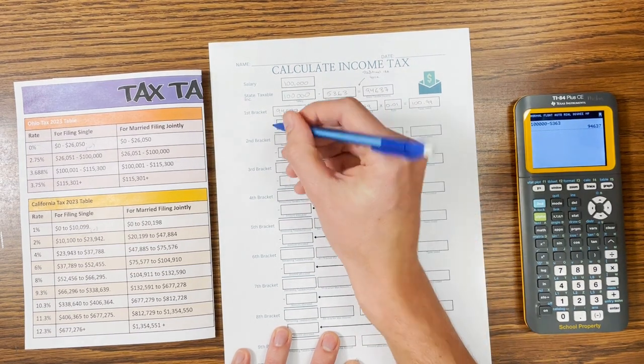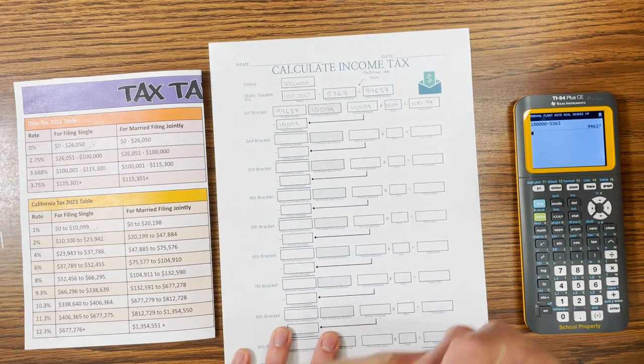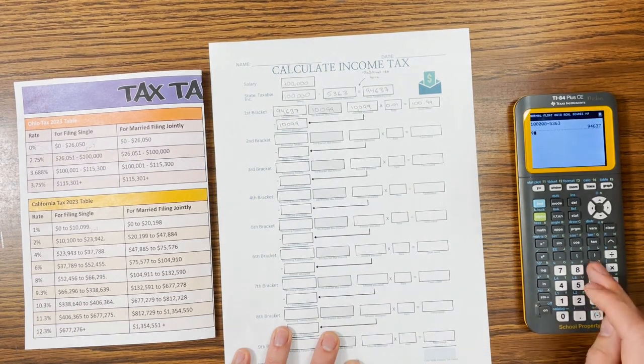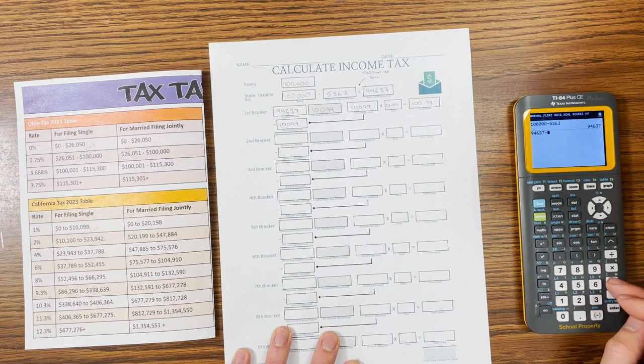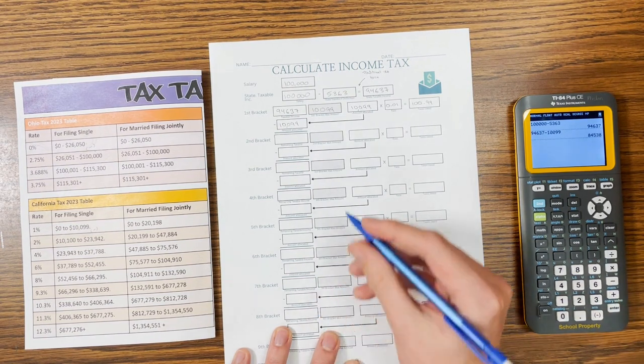So then we've taxed this $10,099, so we can subtract that from our taxable income. We don't want to pay taxes on it twice. So we got $94,637 minus $10,099, $84,538.